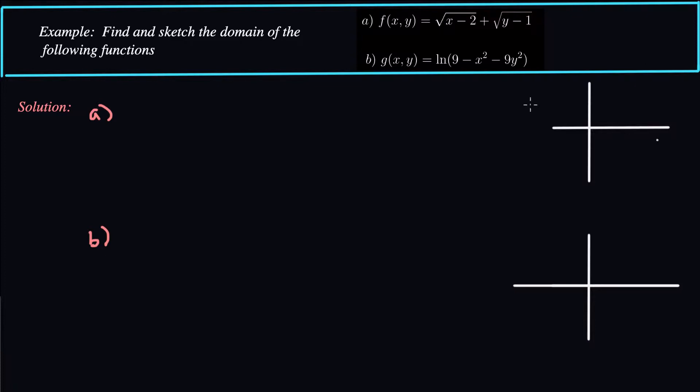Well, the domain is basically all the points except for what's not okay. So what's not okay for the first function is a negative under this radical.